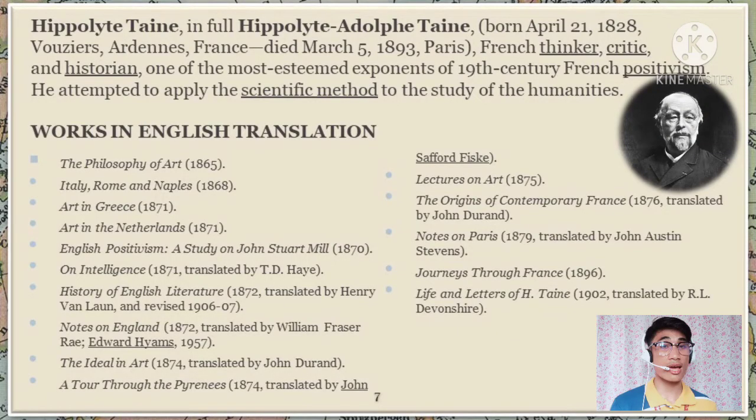Hyppolite Taine was a French thinker, critic, and historian — one of the most esteemed exponents of 19th-century French positivism. He attempted to apply the scientific method to the study of the humanities. His works in English translation are listed on screen.